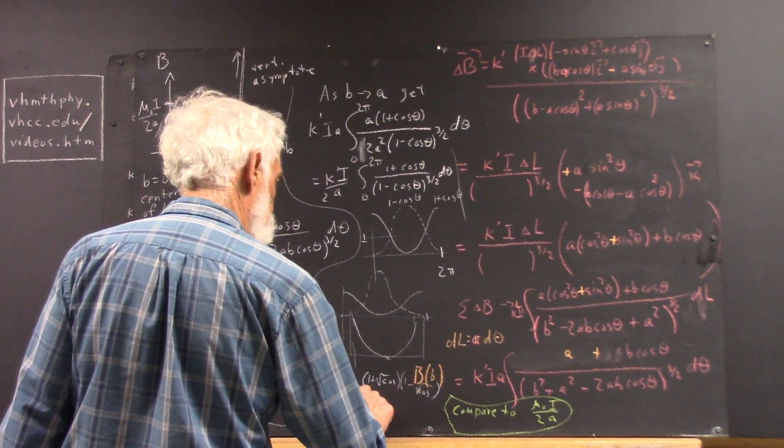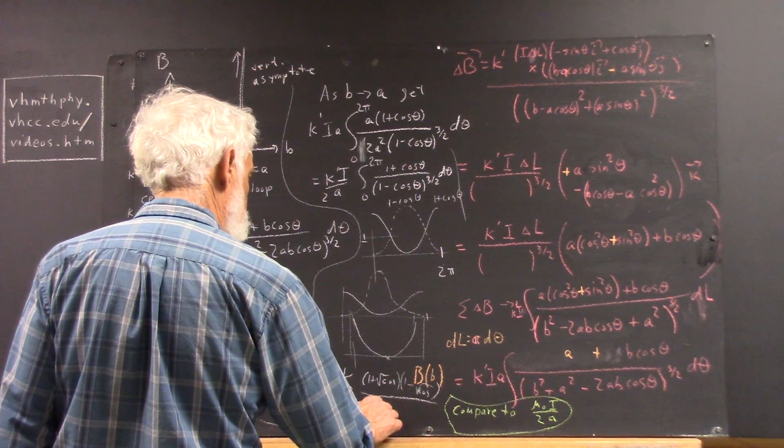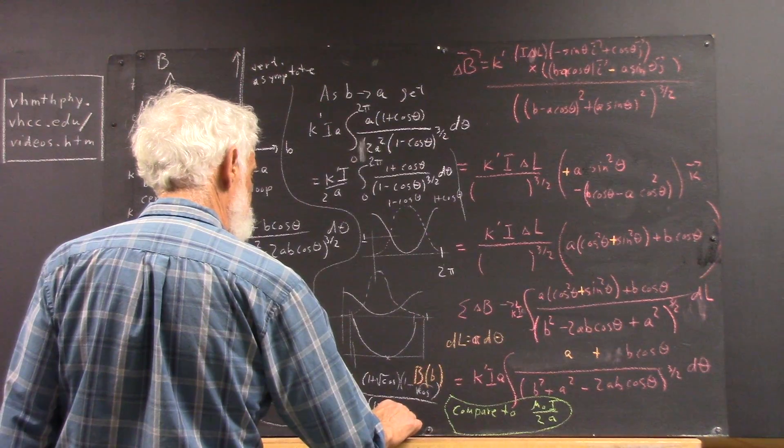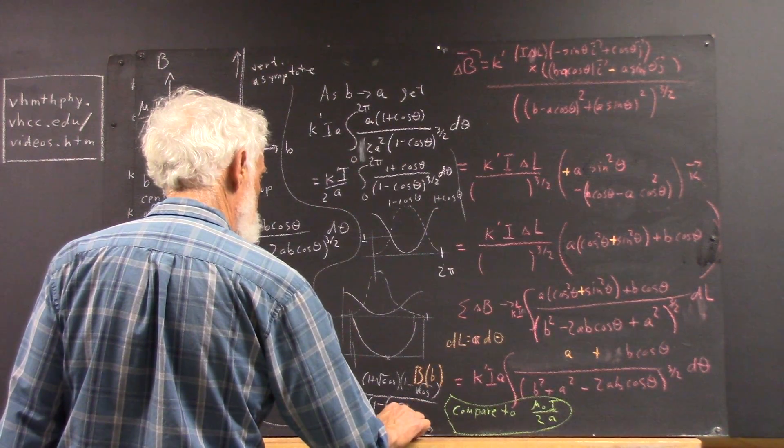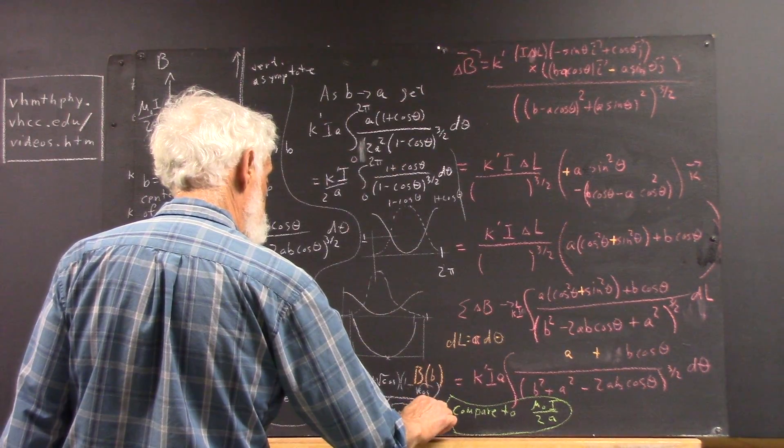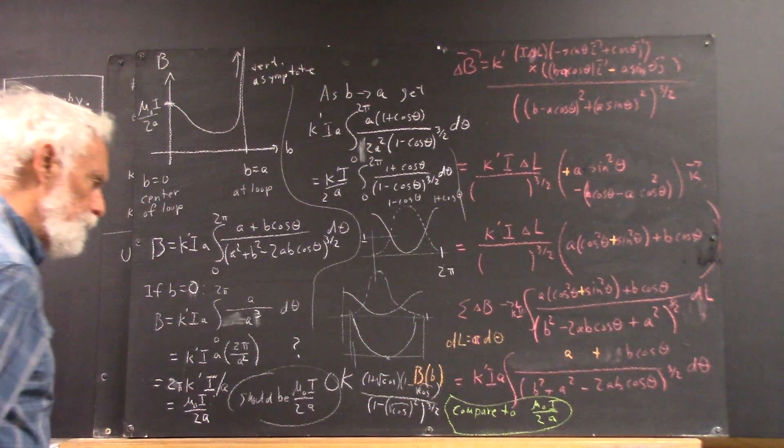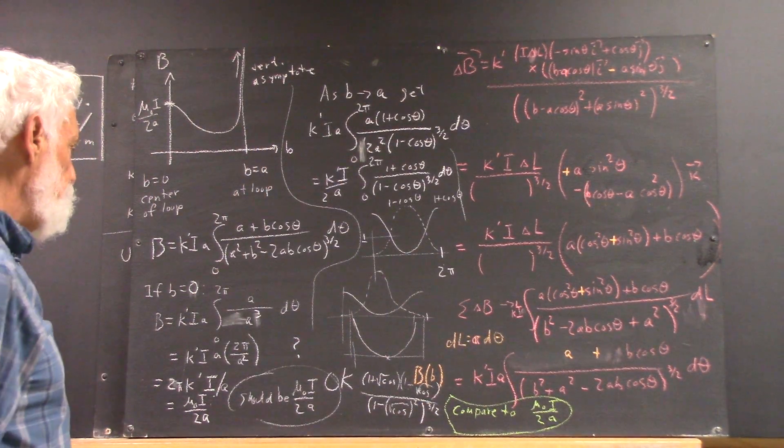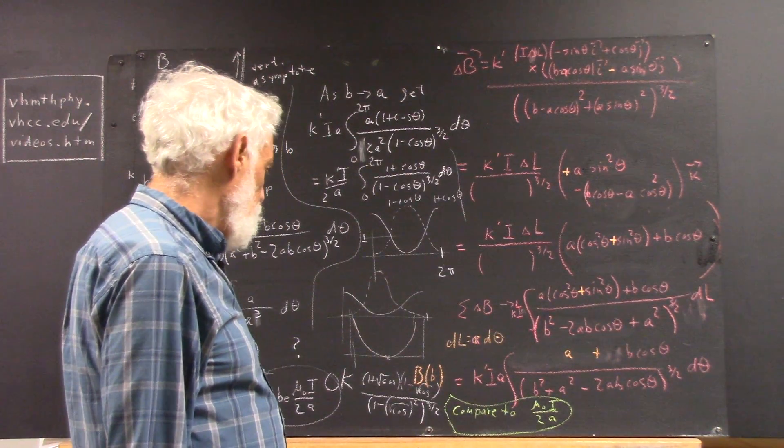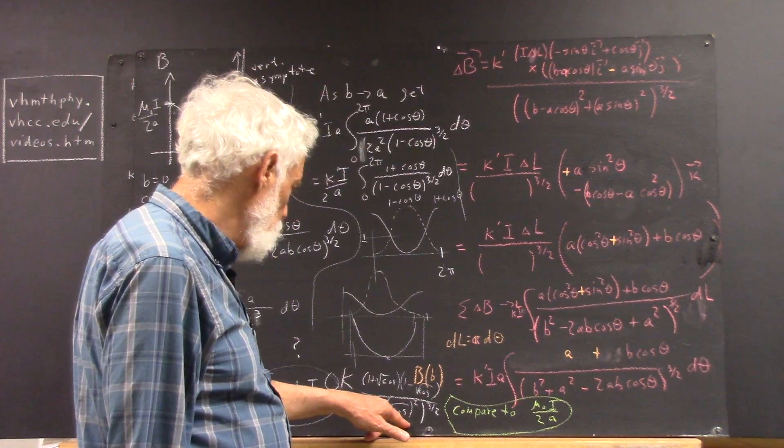I'm running out of board room here, so I'm just kind of scratching this over 1 minus the square root of cosine times 1 plus the square root of cosine.